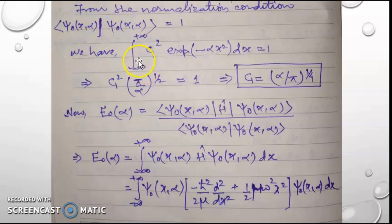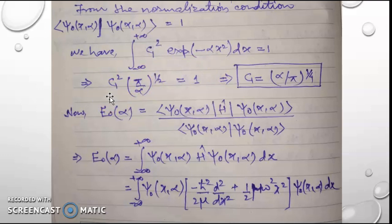The amplitude c₁ is determined from the normalization condition. We evaluate the integral from minus infinity to plus infinity of c₁² exp(−αx²) dx equal to 1. The standard integral evaluates to (π/α)^(1/2), giving us c₁ equal to (α/π)^(1/4). This is the amplitude of the Gaussian function.